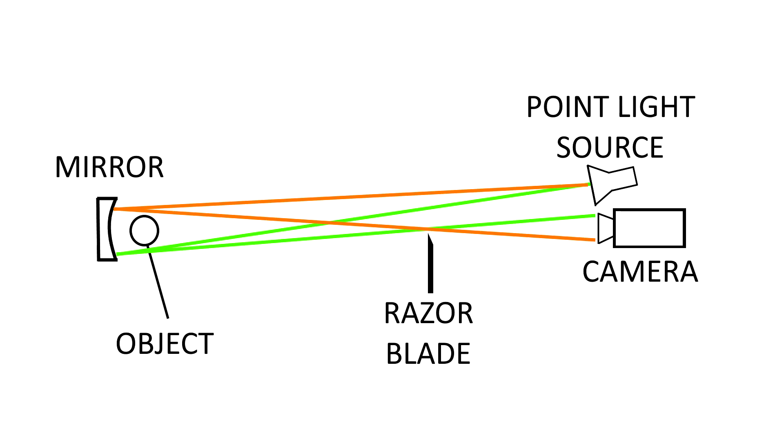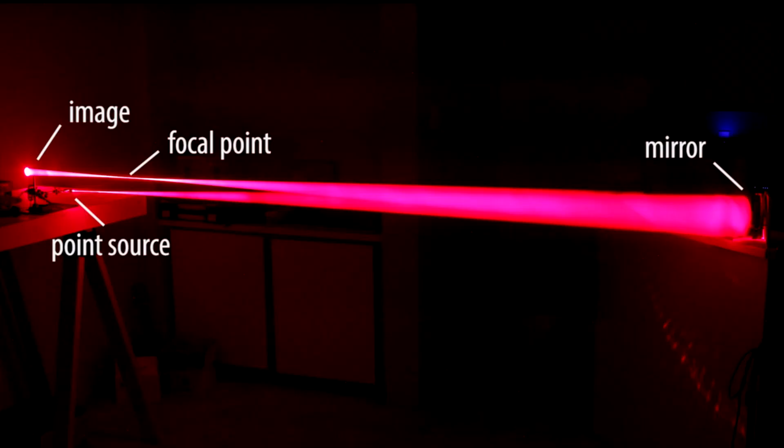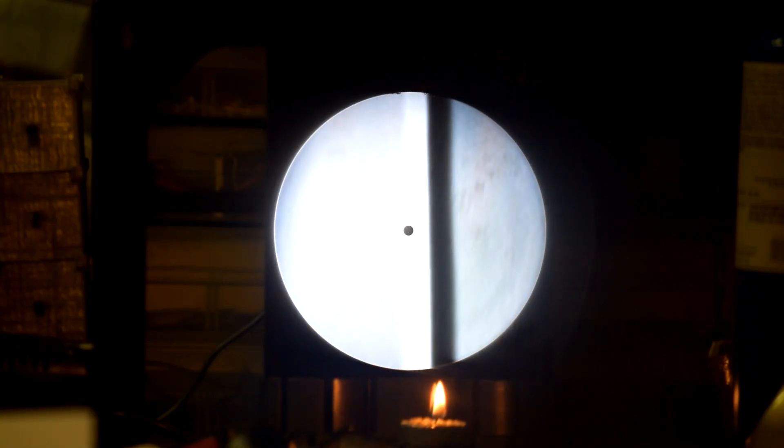Using the mirror, a point light source, a camera, and a razor blade in this configuration shows the different density of air where the light source passes through. The razor blade blocks the more dense air and allows the less dense air image to pass through which points at the camera and displays a visual of air density in black and white.